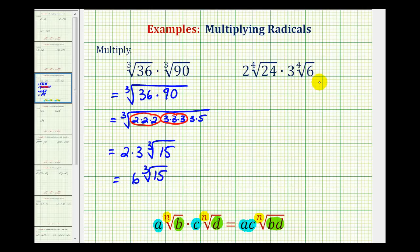Let's look at our second example. Notice how the indexes are the same. So we'll multiply the coefficients and then the radicands. 2 times 3 is equal to 6, and then we're going to have the 4th root of 24 times 6. Again, we could find this product, but since we'll be analyzing the prime factorization to simplify this, we'll go ahead and just find the prime factorization of 24 and 6.